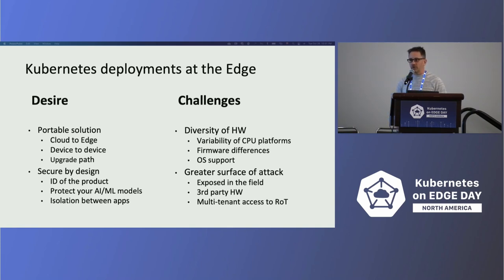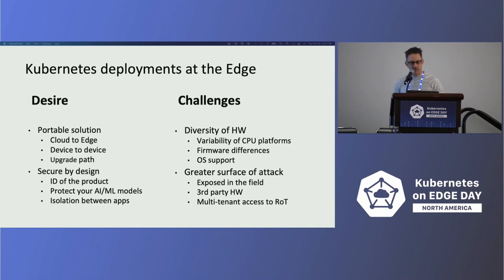It's also important to secure your code and make sure that everything you develop is secure. That poses its own challenge. When you move Kubernetes applications to the edge, the surface of attack is much greater, so you do need to put a little more diligence into the security design of your system. You also want to protect your IP. A lot of discussions this morning talked about AI and ML, and you want to protect the models that are created to draw value from collected data. Security plays a key role in these deployments.